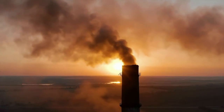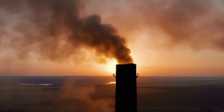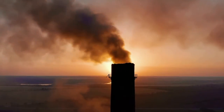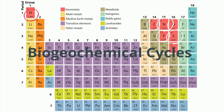Unlike energy that is lost as heat, the six most common elements in organic molecules — carbon, hydrogen, nitrogen, oxygen, phosphorus, and sulfur — are conserved in biogeochemical cycles.